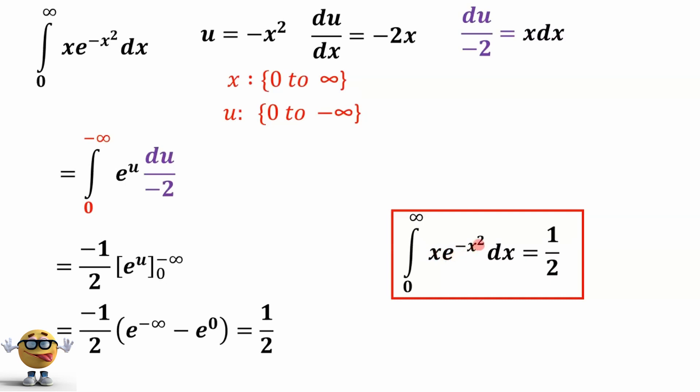So the integral of x times e to the negative x squared from 0 to infinity is 1 half. Right on. Awesome possum. Good luck on your midterms, exams, check out my other videos. Cheers.